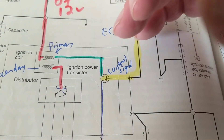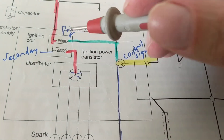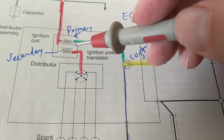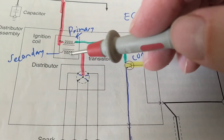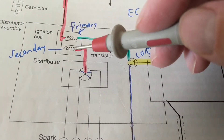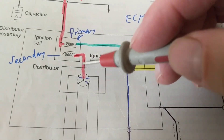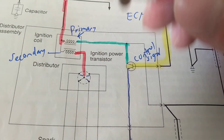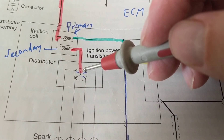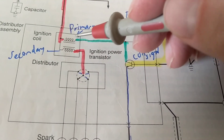By toggling it, the field is building, expanding, and collapsing. That criteria allows us to induce a voltage into the secondary. The secondary has much more turns — you can have about 20 to 30 kilovolts, which is 20,000 to 30,000 volts.